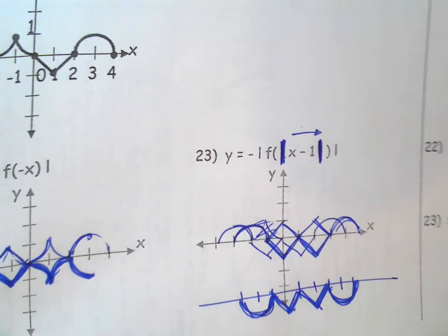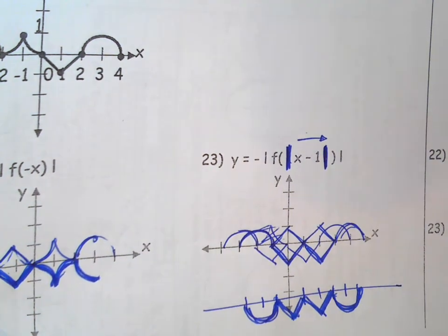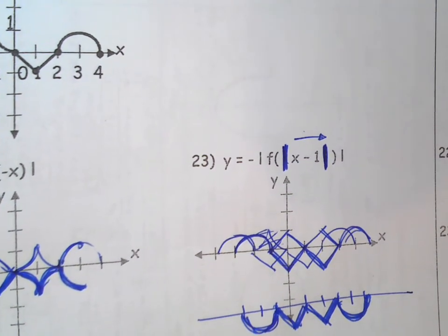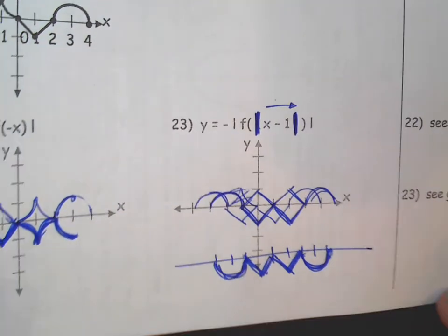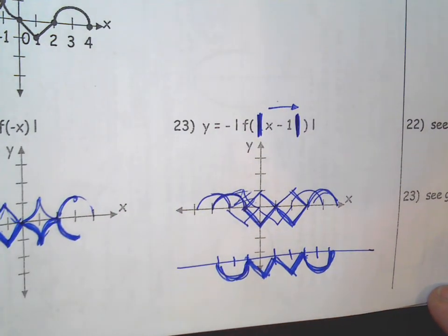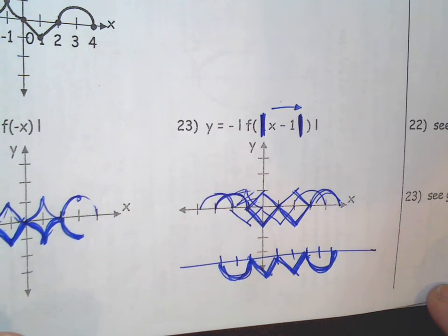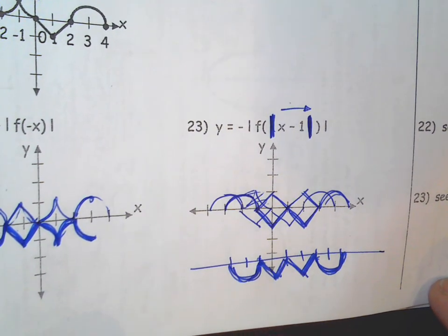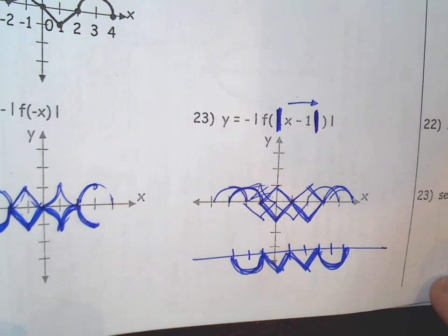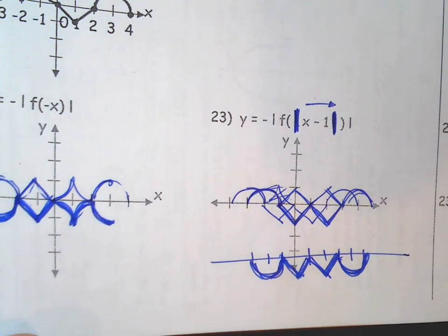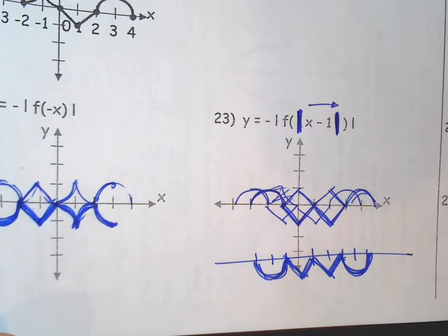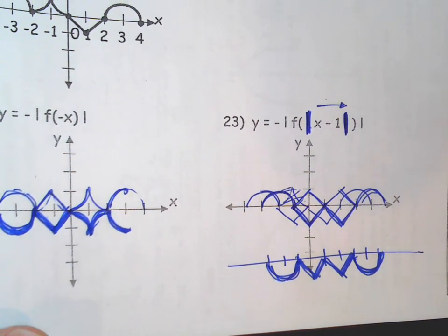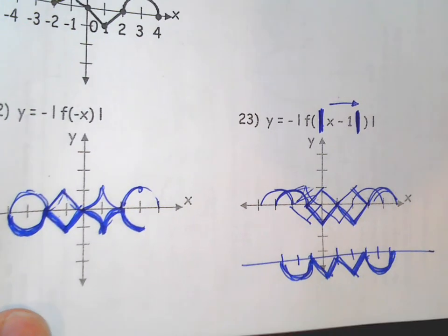That's it for the corrective review. Anything that was on the original test is still fair game, so study your original test. You can go back and redo problems on the pretest and review assignments — there are tons of problems. Print out a clean blank version and do extra practice on areas you need. The good thing is you have all the answers and work to check, which is important. Get ready for your retest.